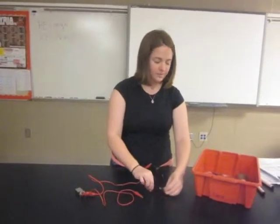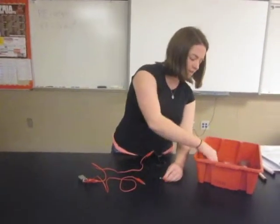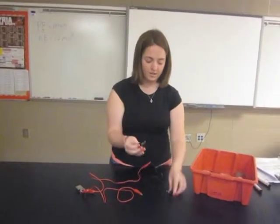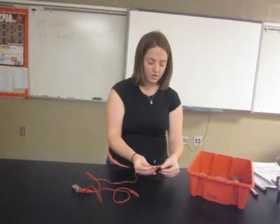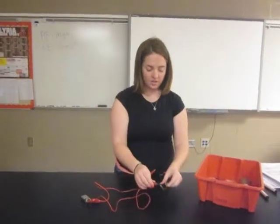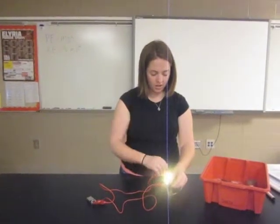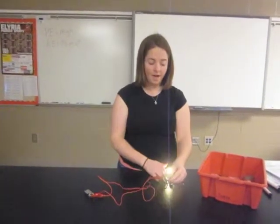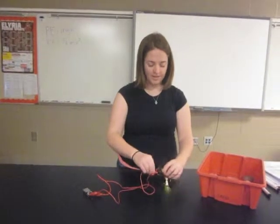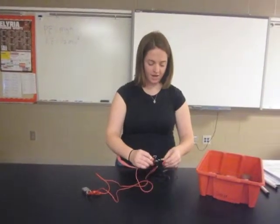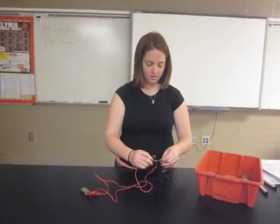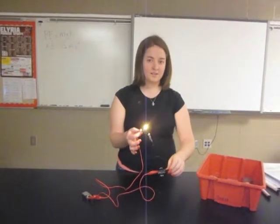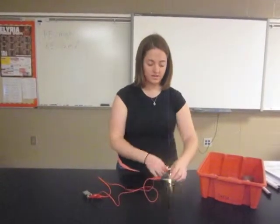The next object we will test is a binder clip. For the binder clip, you want to hook it to the metal part. If you hook it to the metal part on each side, you can see that the light bulb does indeed light up. However, if you hook it to the plastic part on each side, you can see that there is still metal and it is still conducting electricity.